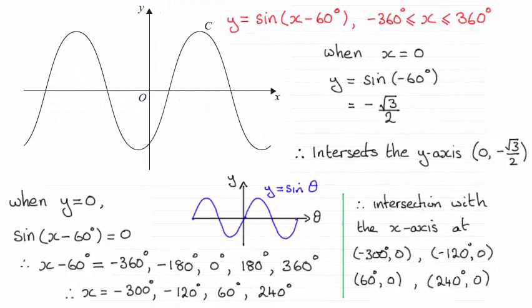Hi there. So for this question then, this curve here that we're given crosses the y-axis at 0, minus root 3 over 2. Remember we had to give the exact values. And it crosses the x-axis at these four points.